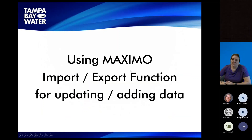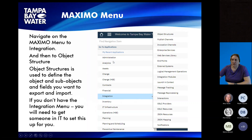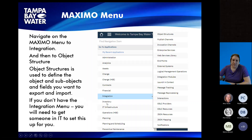The other method is using the import/export function directly in Maximo. This takes a little more configuration inside Maximo. You need to navigate to Integration and then to Object Structures, and use those object structures to define whatever object and sub-objects and which fields you want to export and import. If you don't have this integration menu on your menu, you may need to get someone in IT to set this up for you. It is a more complex feature of Maximo — and this is one of the nice things about MX Loader in that it kind of already does that for you.